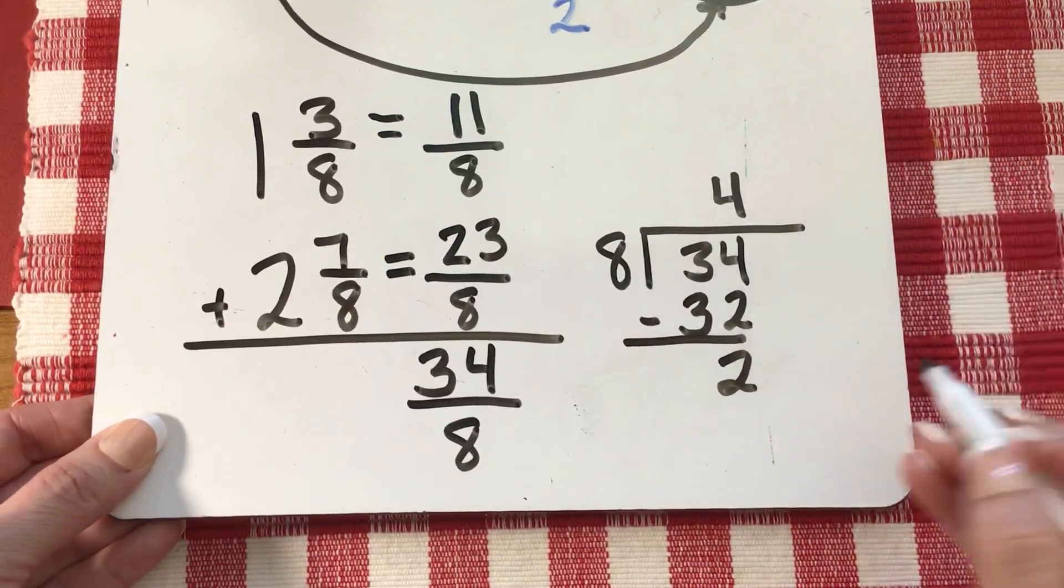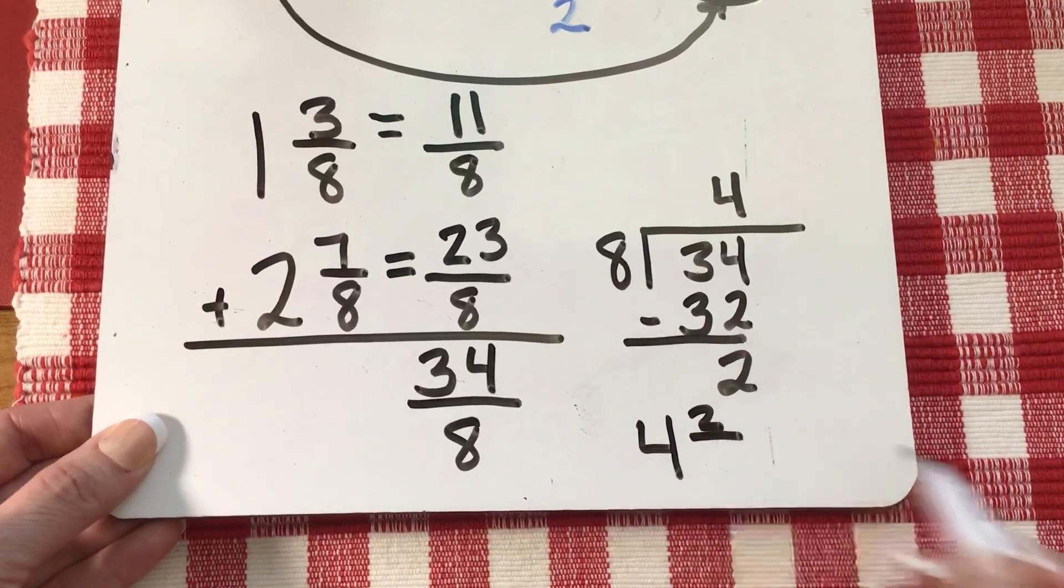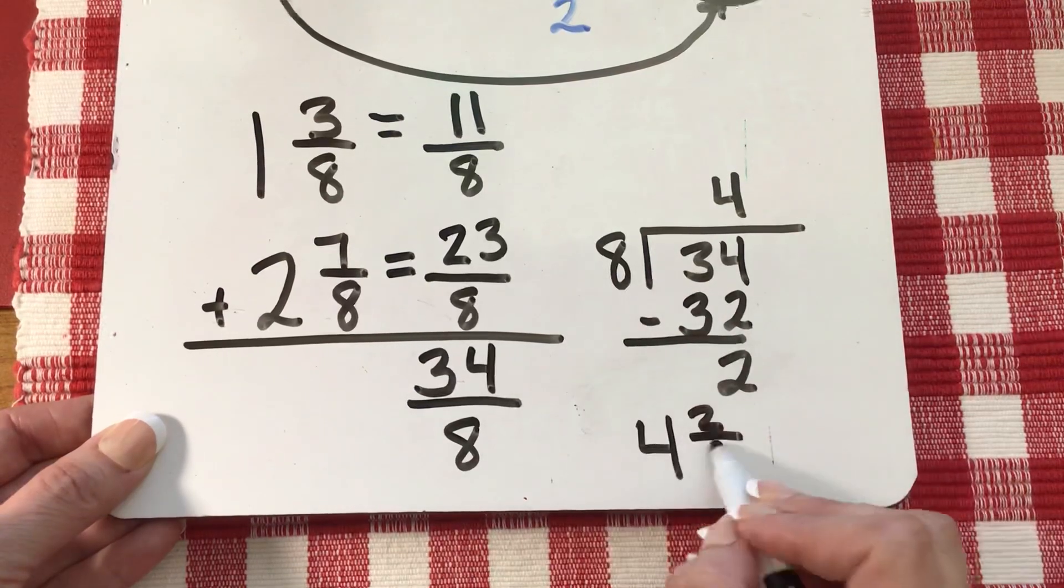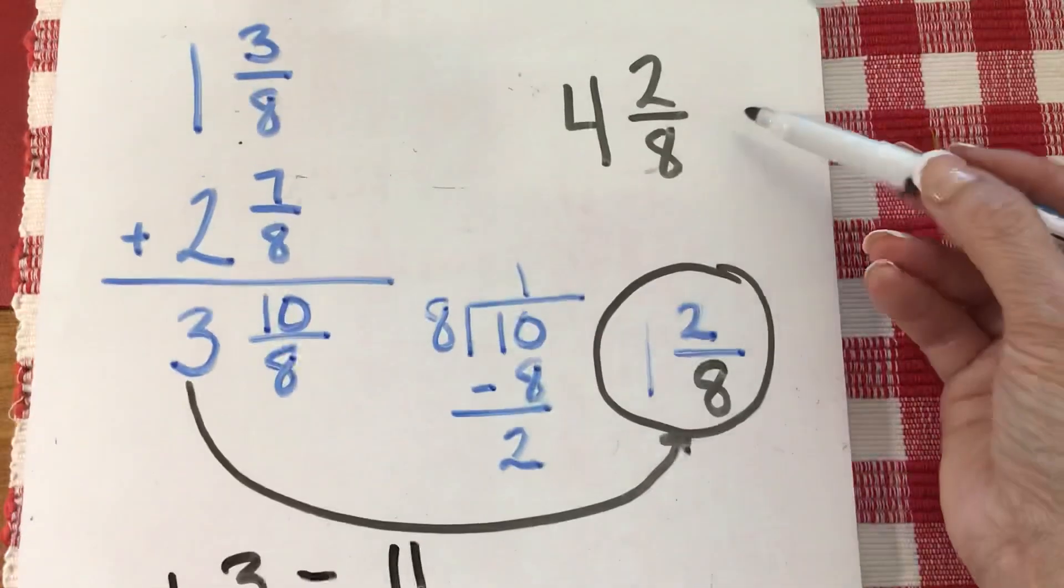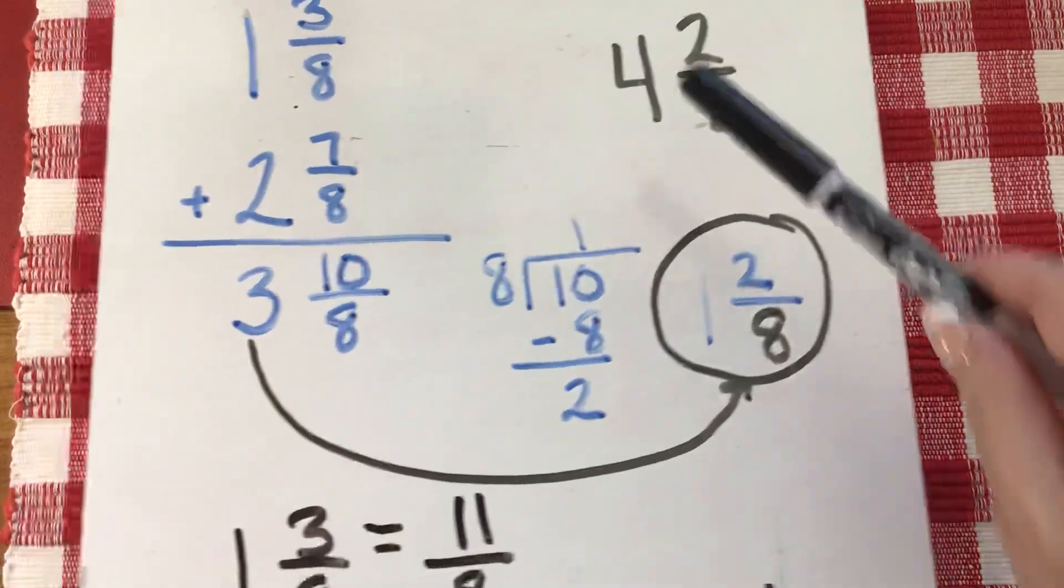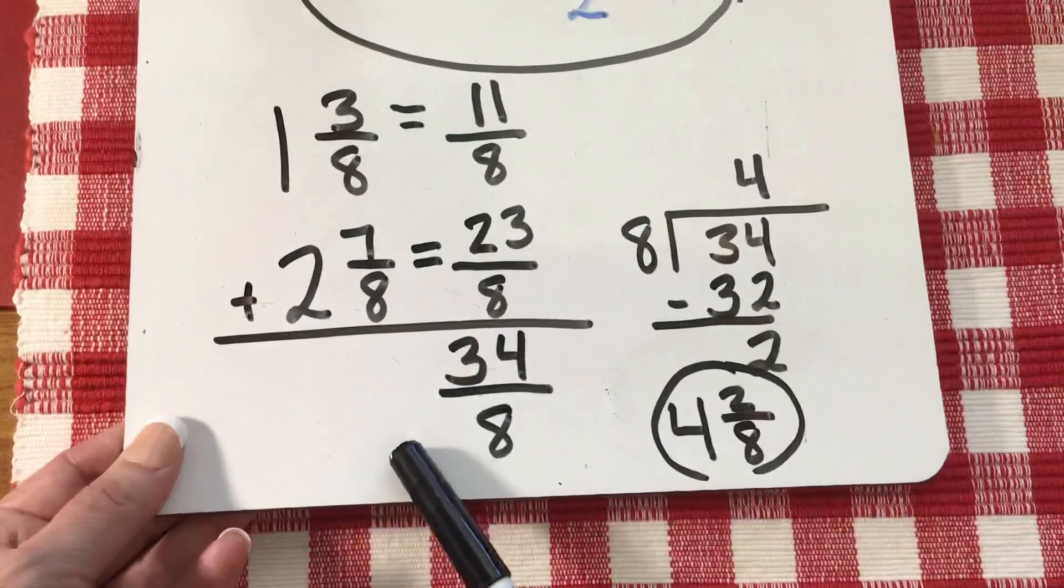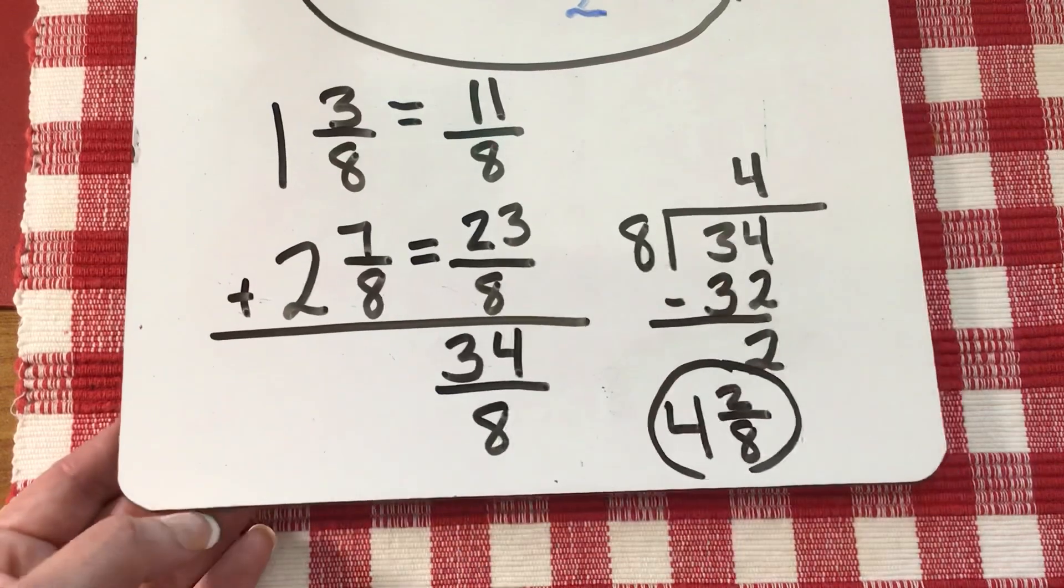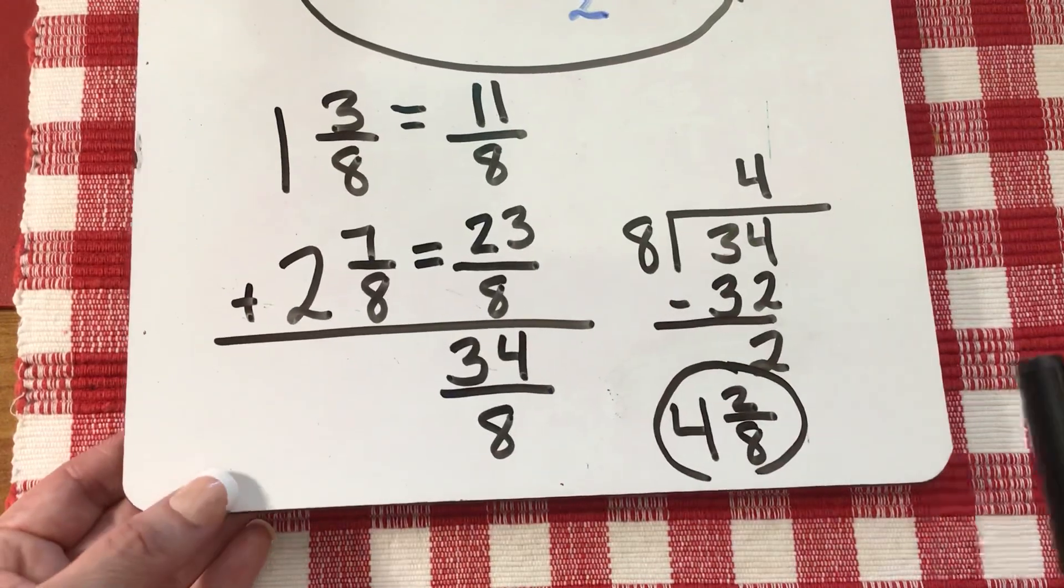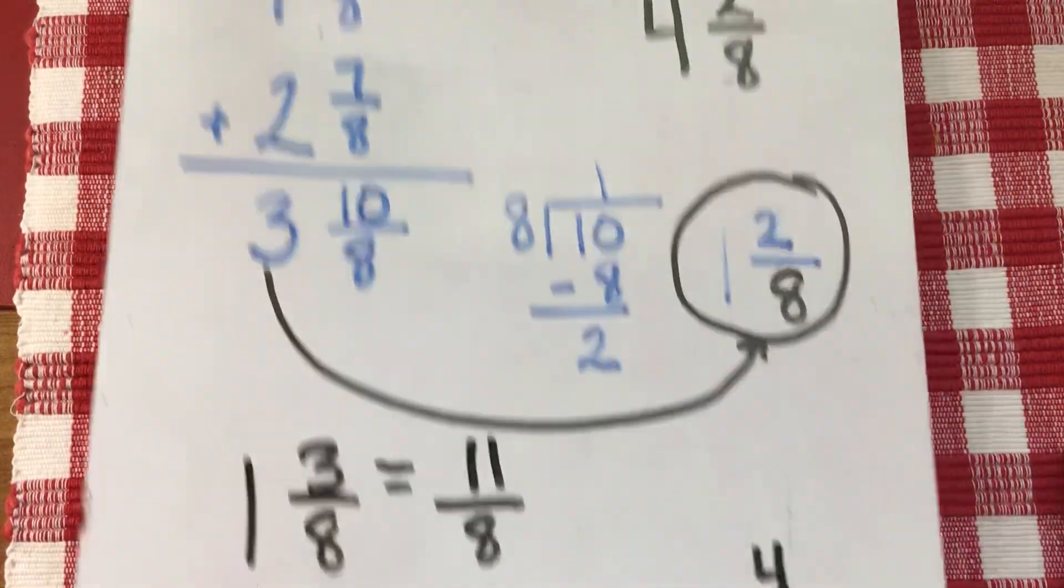My answer is here. My quotient is going to be my whole number. My remainder is my numerator, and my denominator stays the same. Well look at that, I get the same answer here as I get here. So either method you can use. If you're more comfortable with this one, I'm totally fine with that. The only reason I'm showing you guys this is because eventually you will be using this method. So I'm just introducing it to you. Do what works for you.